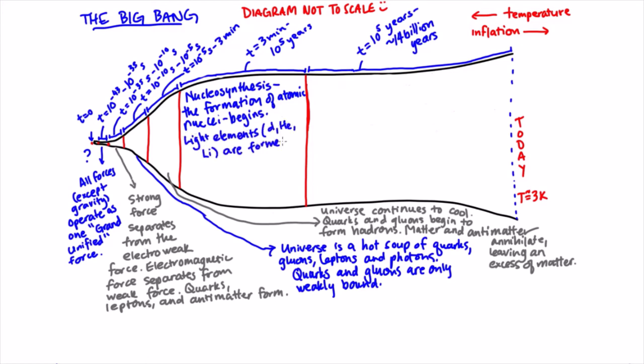10 to the 5 years to today, electrons began to orbit atomic nuclei in order to form atoms, and for the first time, the universe was not full of free electrons.